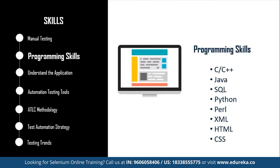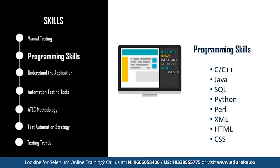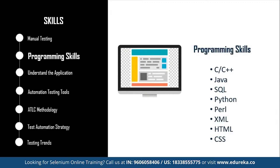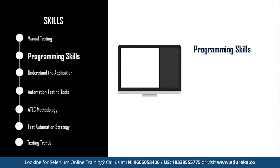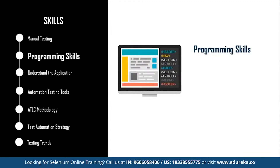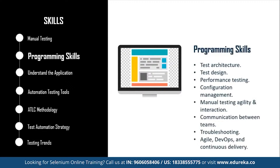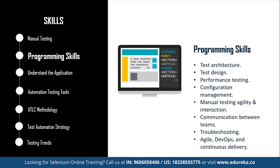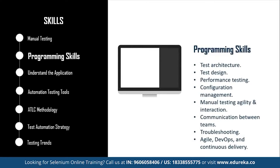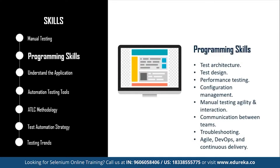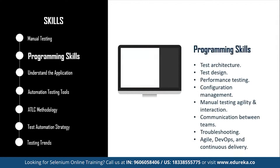The second step is programming skills. You need programming languages such as C, C++, Java, SQL, Python, Perl, XML, HTML, and CSS. A manual tester should also master technical skills like test architecture, test design, performance testing, configuration management, manual testing agility, communication between teams, troubleshooting, and agile DevOps and continuous delivery. The combination of all these skills will help you transition to automation testing easily and smoothly.